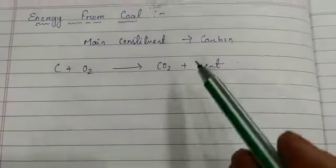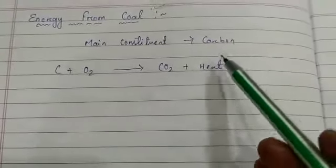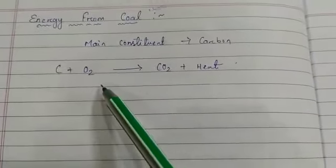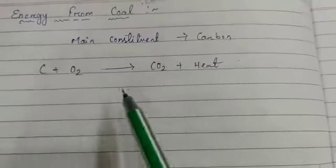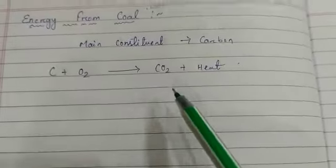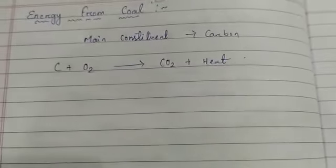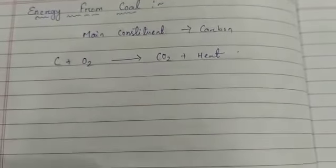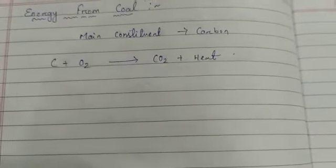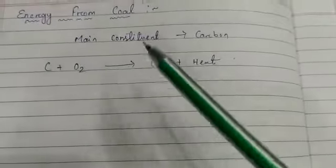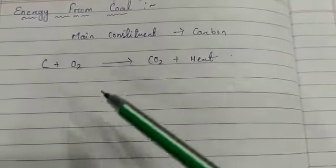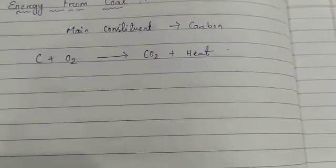Coal burns in air to give energy. Its main constituent is carbon, which reacts with oxygen to give carbon dioxide and heat. So coal burns in air to give energy.